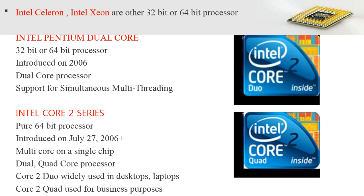Other notable 32 or 64-bit processors include the Intel Celeron and Intel Xeon. The Intel Pentium Dual Core processor, introduced in 2006, is also a 32 or 64-bit processor. Its dual-core design — a single chip with two independent processing units — supports simultaneous multi-threading, allowing different tasks to be executed in parallel.